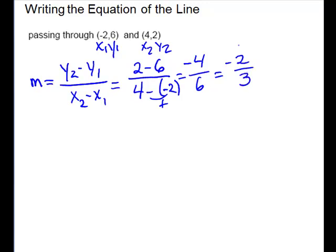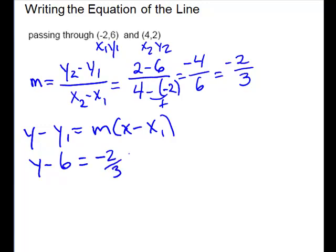So my slope is negative 2 thirds and I'll just use my point number 1 there. So now I write my point slope form. Y minus y1 equals m times x minus x1. You plug into the one with the subscripts. So I have y minus. My y1 is 6 equals m negative 2 thirds times x minus my x1, which is negative 2.